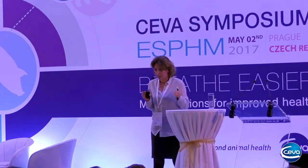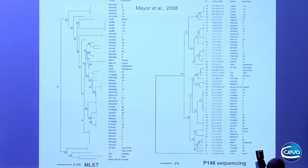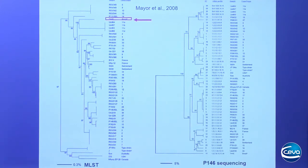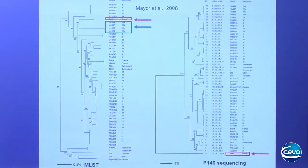Here are two example techniques: multi-locus sequence typing on the left, and sequencing of a single gene, P146, on the other. I show these two examples to illustrate how results should be interpreted. For example, a strain isolated from a sample from Brazil is located in the same cluster as the blue ones from farm 11 in one technique. However, in the other phylogenetic tree, the Brazil sample moves to the bottom while the blue ones move to the top. Interpretation of such techniques is not always easy, but the information they provide is really important.